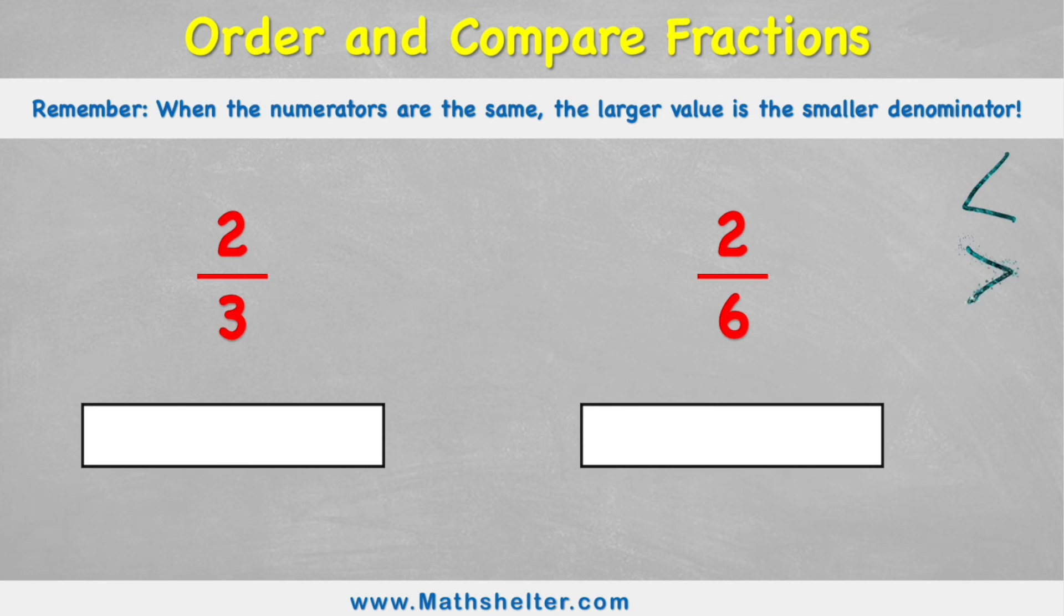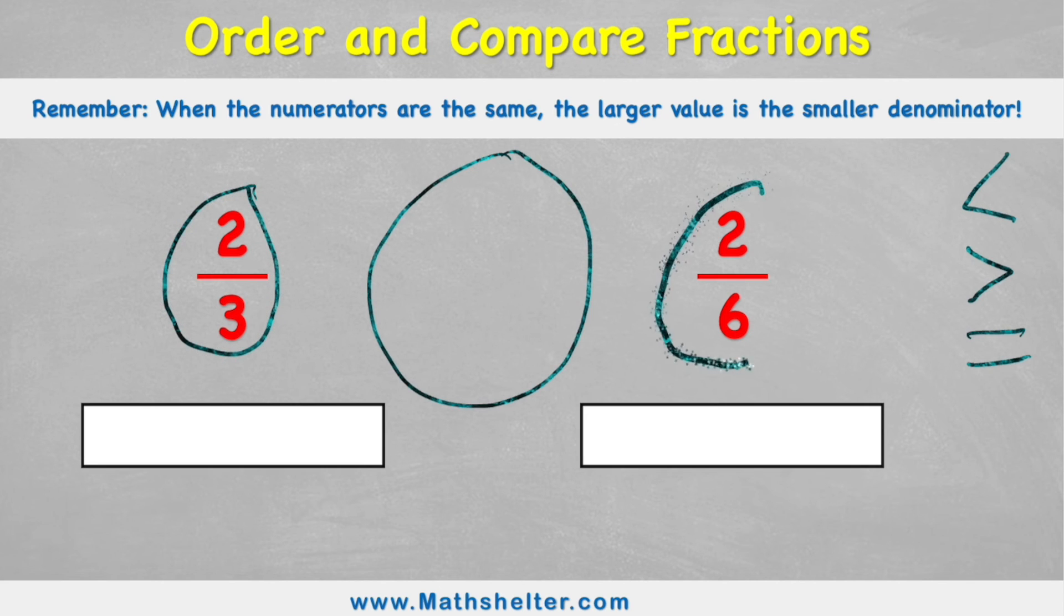So let's put those symbols on the right-hand side. Let's put less than, greater than, and equal to, because we're going to want to put one of those in our circle here to compare these two fractions. Now let's think about this before we start. I have two-thirds compared to two-sixths. Which one do we think is going to be more? Well, this one has a six on the bottom, which means it's a bigger number, so surely that's more.